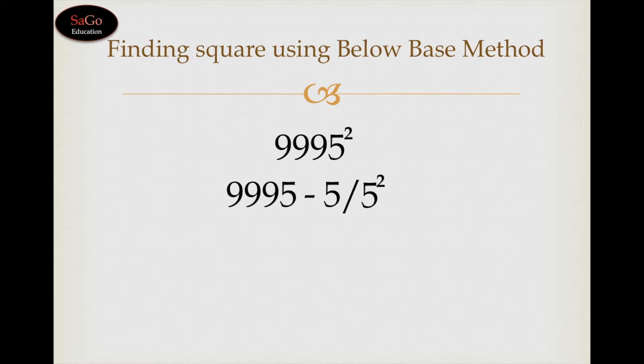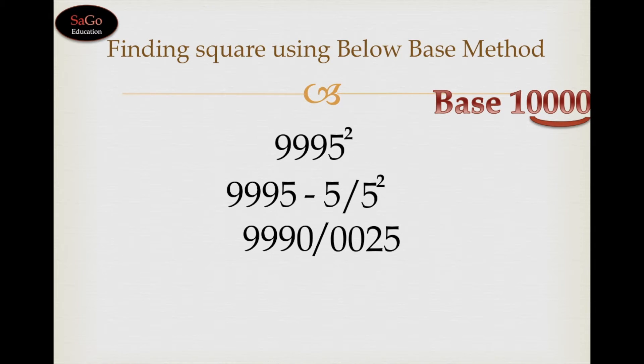9995 minus 5 is 9990. Put a slash, and 5 squared is 25. But rather than writing 25, we would write 0025 because in the base 10000 there are four zeros, and 25 is a two-digit number. So we would prefix two zeros before 25 to make it a four-digit number.